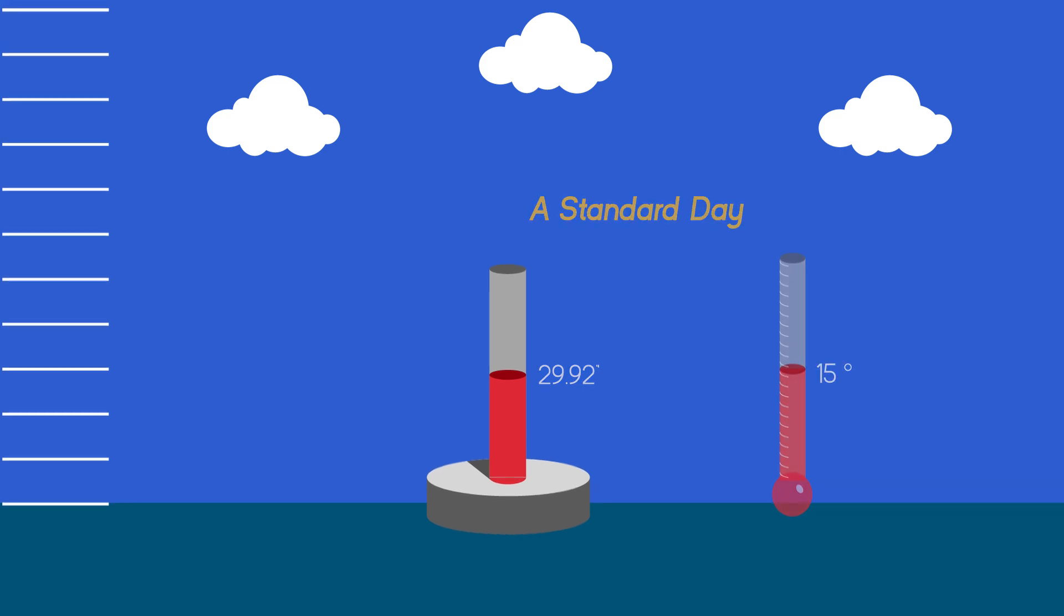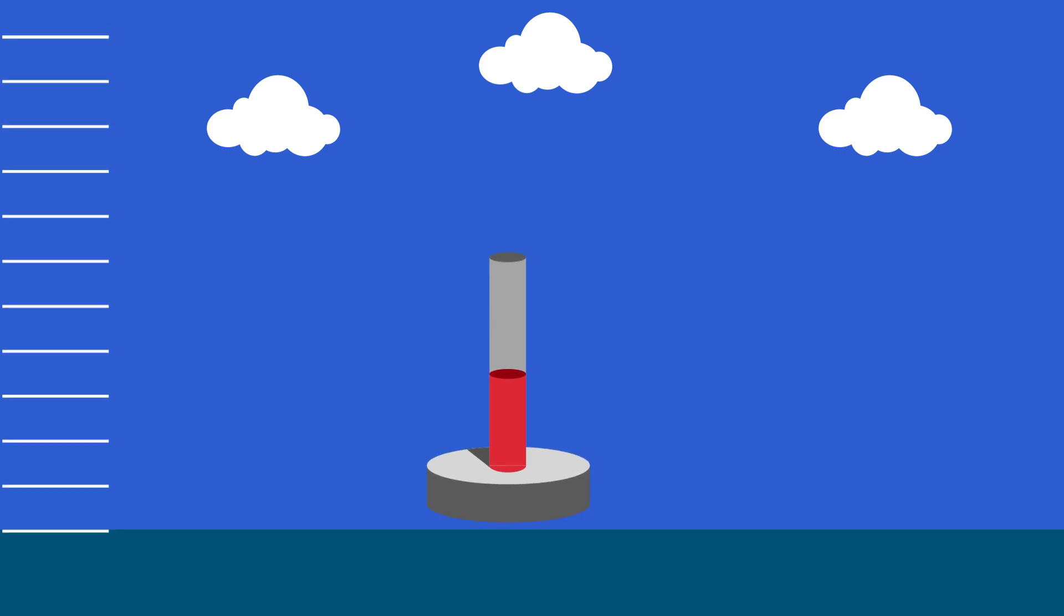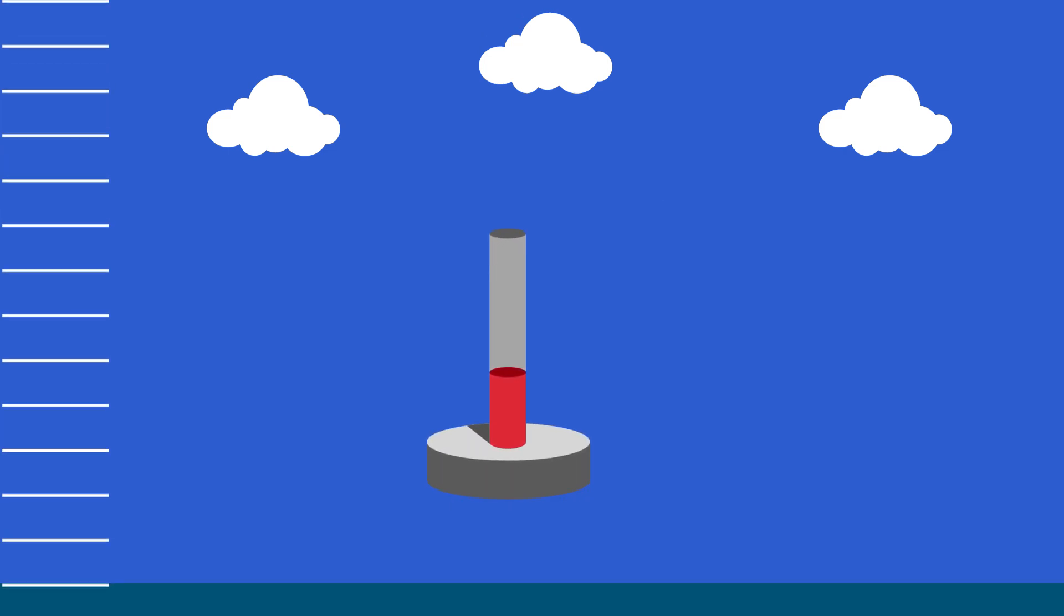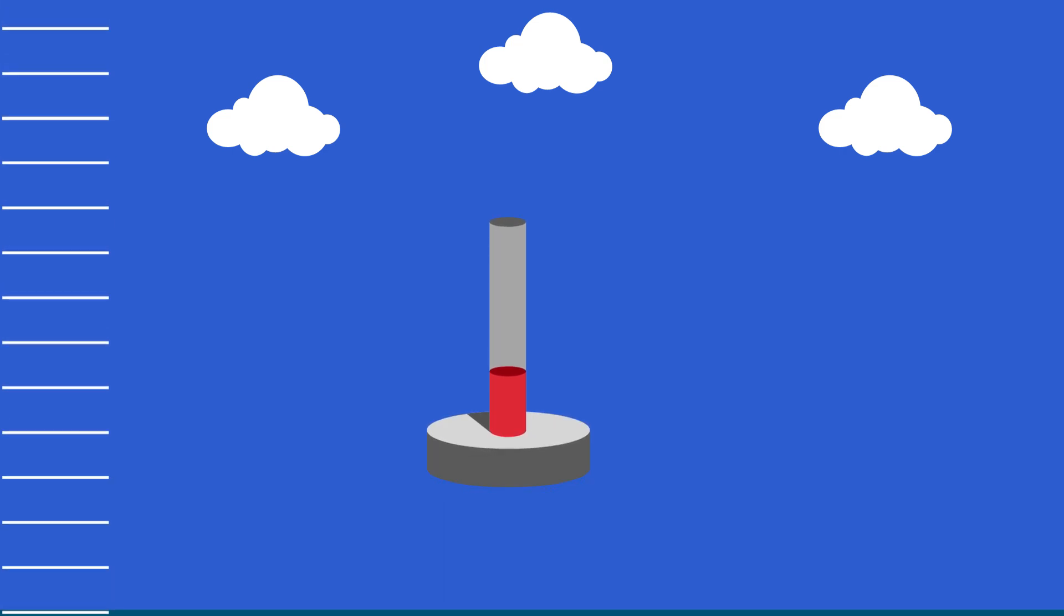In the standard atmosphere, we have a pressure of 29.92 inches of mercury at sea level with a temperature of 15 degrees Celsius, just like on a standard day. As we move up in the atmosphere, we see the pressure decrease one inch of mercury for every thousand feet, and this will remain true until we get to about 5,000 feet.